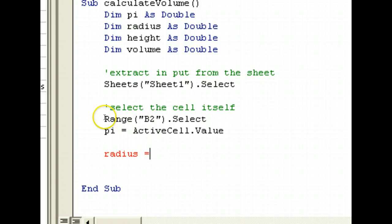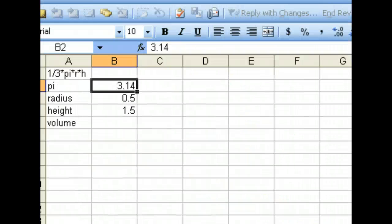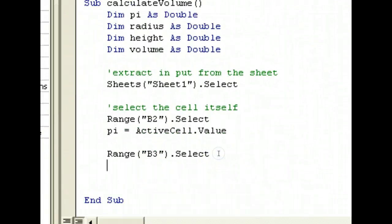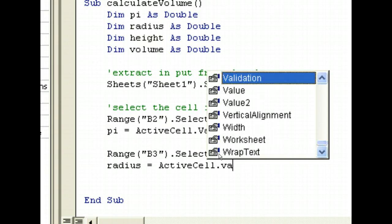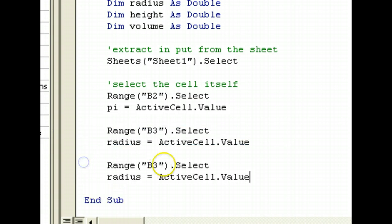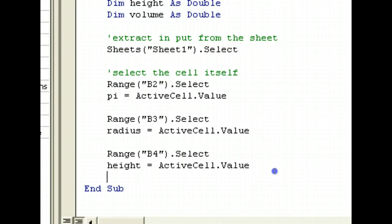So, what we can do is we can actually do this straight away. We can select the range. So, our radius is in B3, right? B3. And height is in B4. So, B3. So, what's in B4 is our height. So, we change it to height. So, what we have now is we have our pi, radius and height.